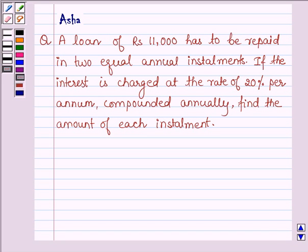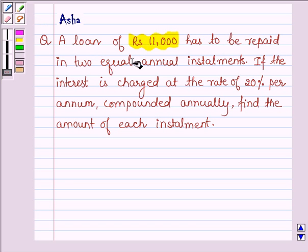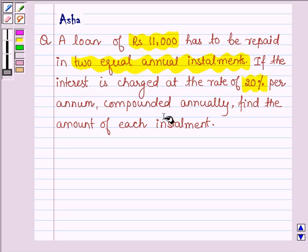Hello and welcome to the session. The given question says a loan of rupees 11,000 has to be repaid in two equal annual installments. If the interest is charged at a rate of 20% per annum compounded annually, find the amount of each installment.